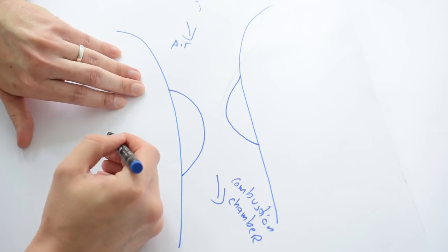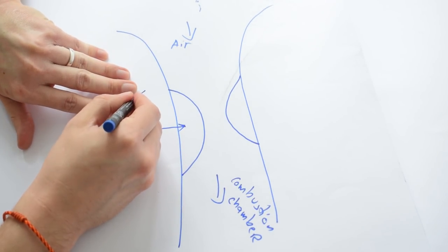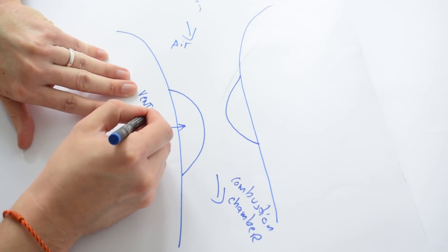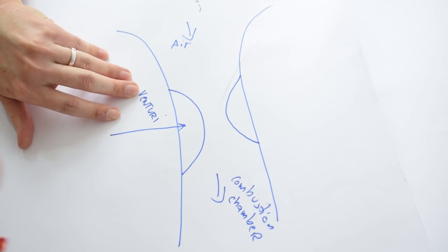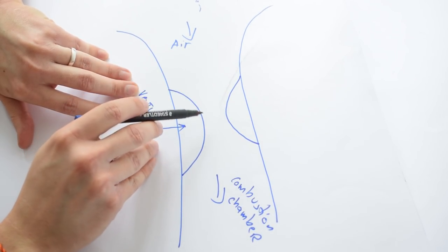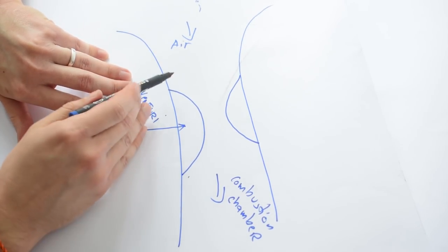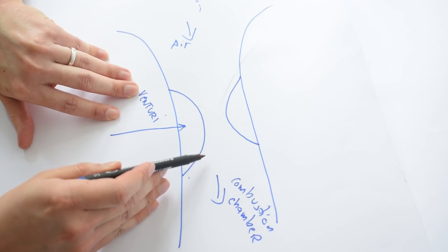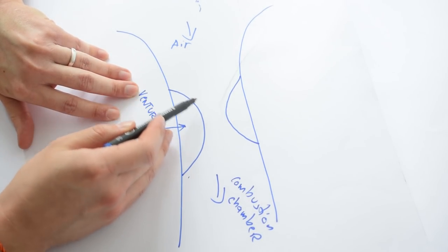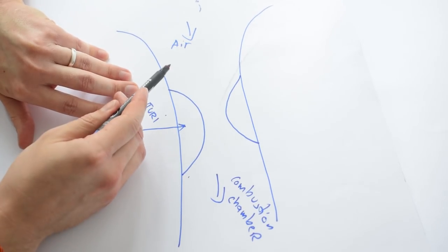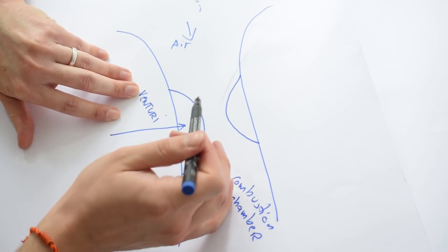Now this narrowing is called a venturi. Now the air is going to increase in speed inside the venturi because it has to cover a larger surface, which is why it needs to speed up to cover it. As it speeds up it's going to decrease in pressure.